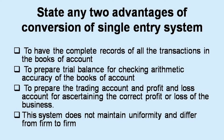State any two advantages of conversion of single entry system. First, to have complete records of all transactions in the books of accounts. Second, to prepare a trial balance for checking arithmetic accuracy. Third, to prepare the trading account and profit and loss account for ascertaining the correct profit or loss of the business. This system does not maintain uniformity and differs from firm to firm.